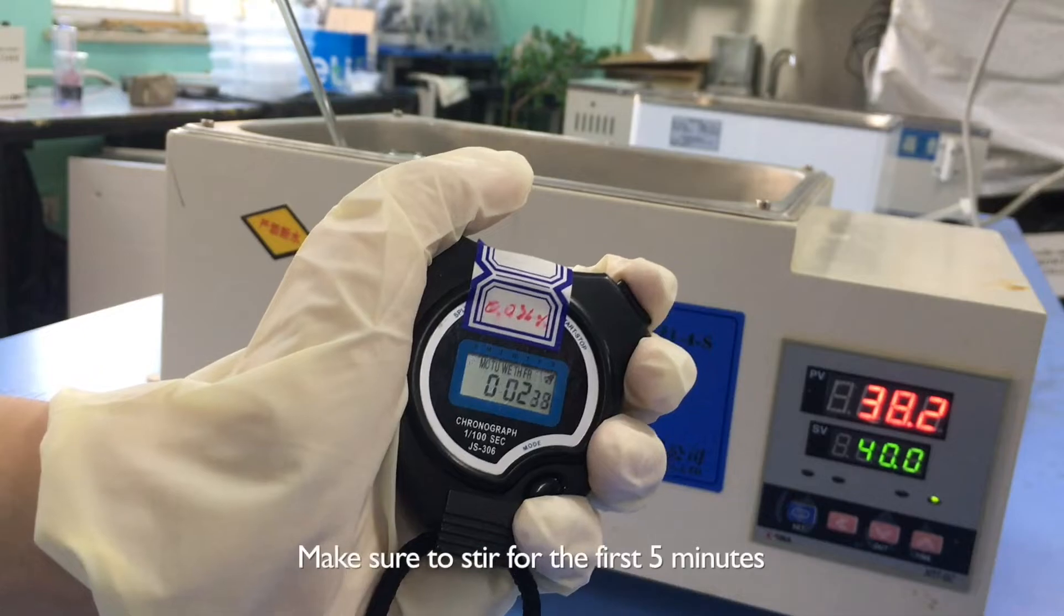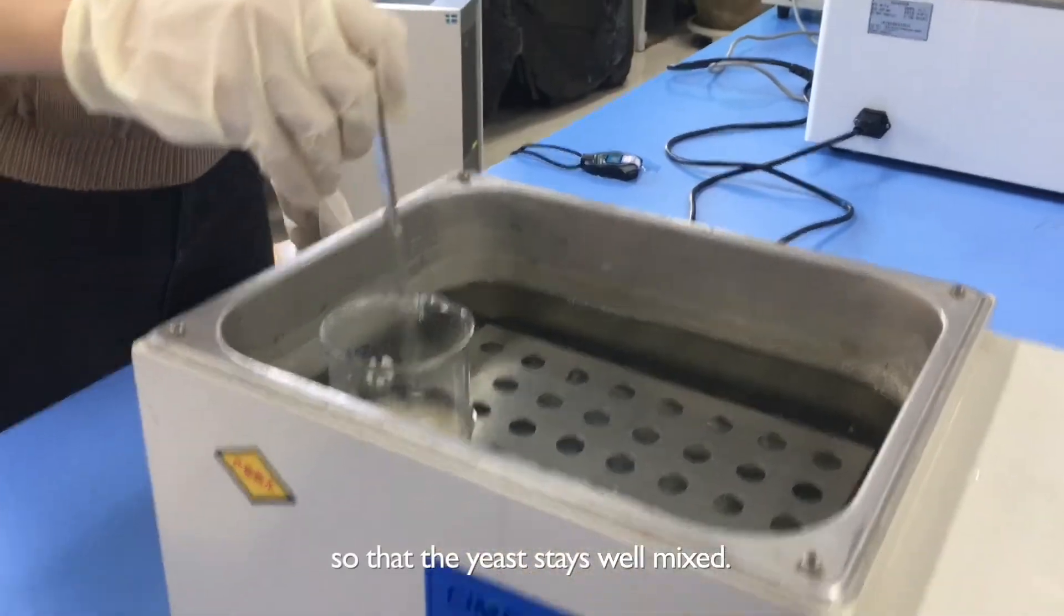Set the timer for 30 minutes. Make sure to stir it for the first 5 minutes so that the yeast stays well mixed.